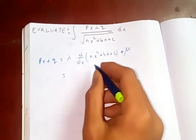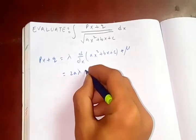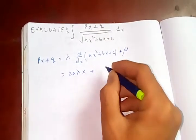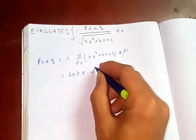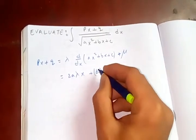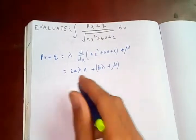Now if you differentiate, you will get 2a lambda x plus b lambda plus mu constant term.